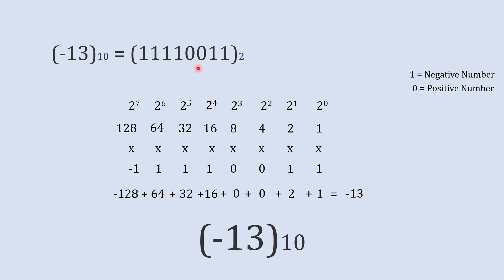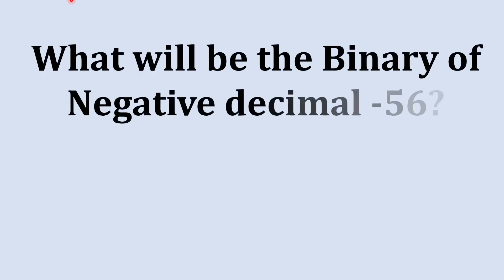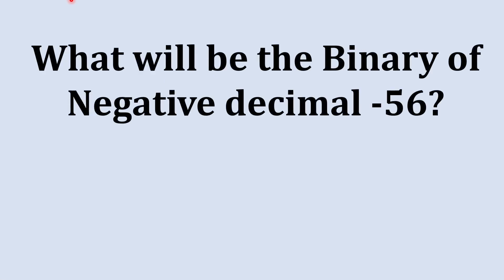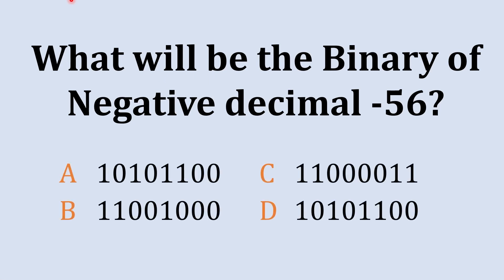That is how we can say this binary number is equivalent to minus 13. Now pause for a moment: what will be the binary of negative decimal minus 56? Your options are given on screen. Pause the video, calculate it, and post the answer in the comment section below.